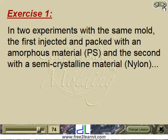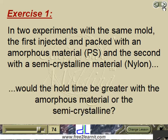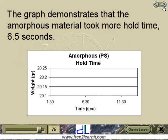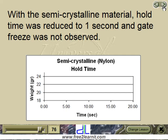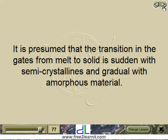Exercise 1: in two experiments with the same mold — the first with an amorphous material (polystyrene) and the second with a semicrystalline material (nylon) — would the hold time be greater with the amorphous or the semicrystalline? The graph demonstrates that the amorphous material took more hold time at 6.5 seconds. With the semicrystalline material, hold time was reduced to one second and gate freeze was not observed. It is presumed that the transition in the gates from melt to solid is sudden with semicrystallines and gradual with amorphous materials.